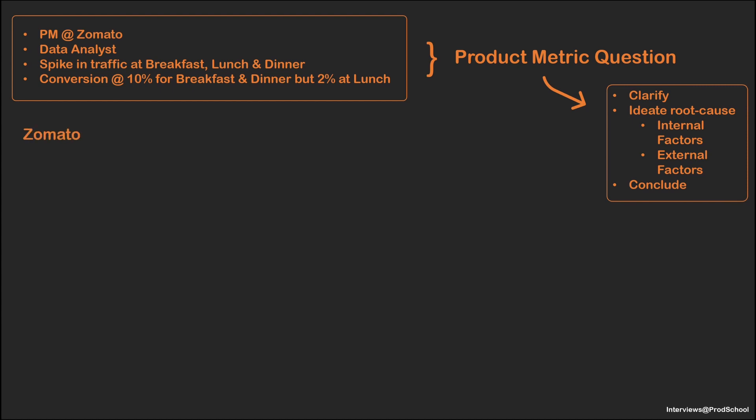Zomato is a food delivery service where users log in via mobile or web application, select a particular restaurant, add individual food items to their cart, pay and check out. The delivery service then submits the orders to gig economy workers who pick up the food and deliver it to the customer. I'm currently seeing a trend whereby traffic spikes at breakfast, lunch, and dinner, but the conversion rate is lower around lunchtime, and I'm tasked with figuring out why conversion is so low at lunch.